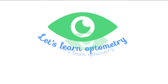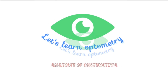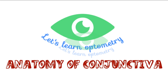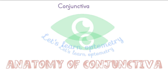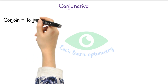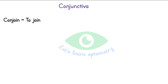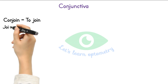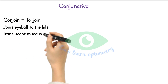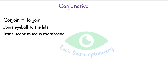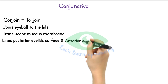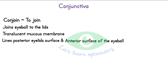Hello all, welcome to Let's Learn Optometry. In this video we will see the anatomy of conjunctiva. The name conjunctiva has been derived from the term 'conjoin', which means to join, because it joins the eyeball to the lid. It is a translucent mucous membrane which lines the posterior eyelid surface and the anterior eyeball surface except the cornea.